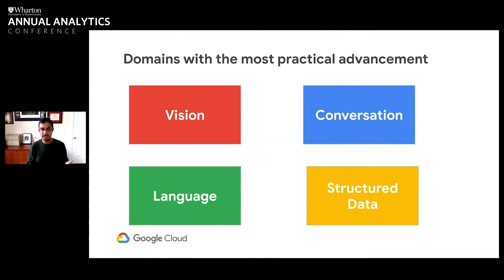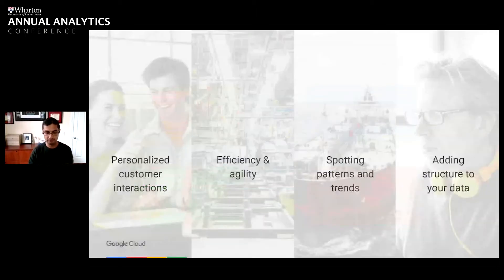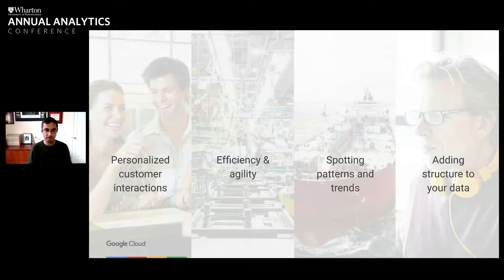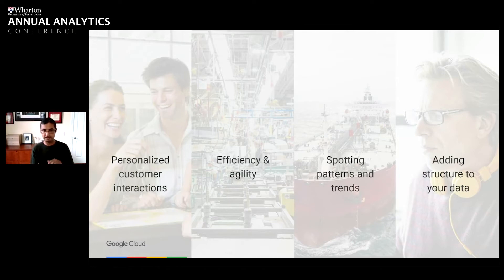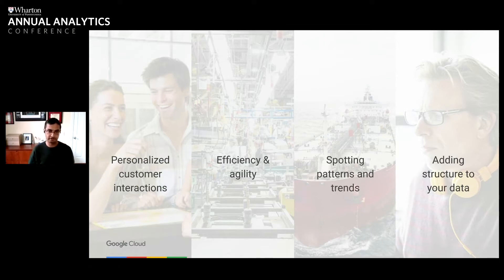AI is being applied in a few key ways in different industries. AI is being used to personalize customer interactions in areas like retail and banking, to make processes more efficient or more agile through automation, to spot patterns and trends — everything from finding defects on a manufacturing shop floor to detecting trends in large data sets — and to add structure to unstructured data. About 90 percent of the data within the average enterprise is unstructured, and AI is able to digest that and turn it into structured data for decision making.